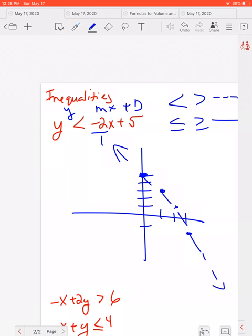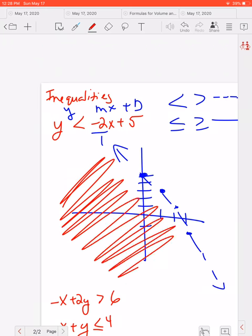And then we need to decide what side to shade. So y is less than all this. So if I'm looking at my y-intercept, I want to go below this. So we are going to shade this entire side here.